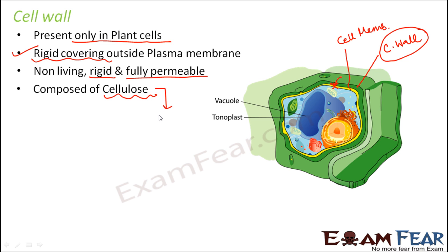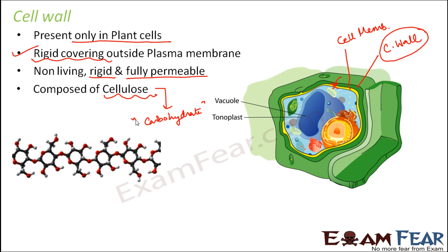What is cellulose? Cellulose is a type of carbohydrate. This is how the structure of cellulose looks like — it is a very complex structure and it is a polysaccharide. That means many small units of monosaccharides or simple sugars get joined together to form this complex branched structure of cellulose.